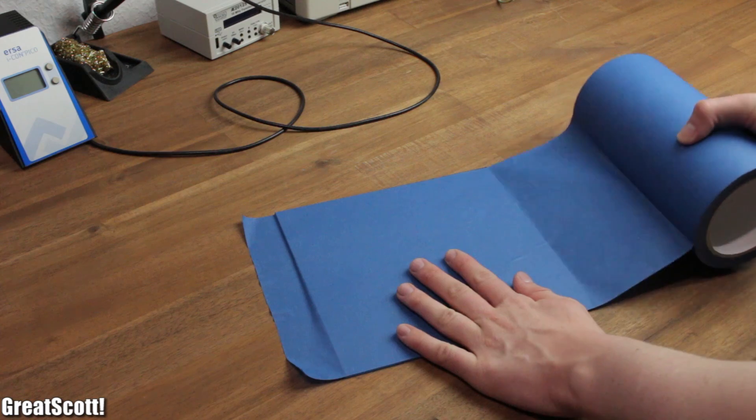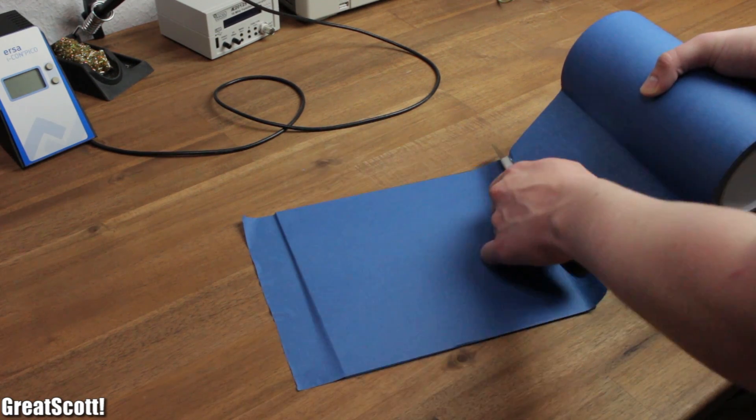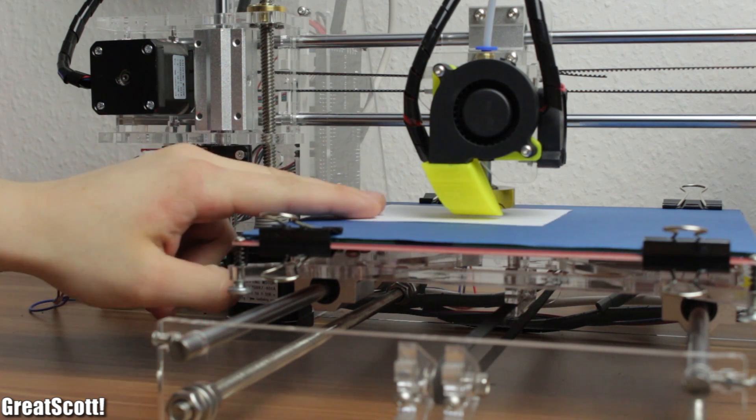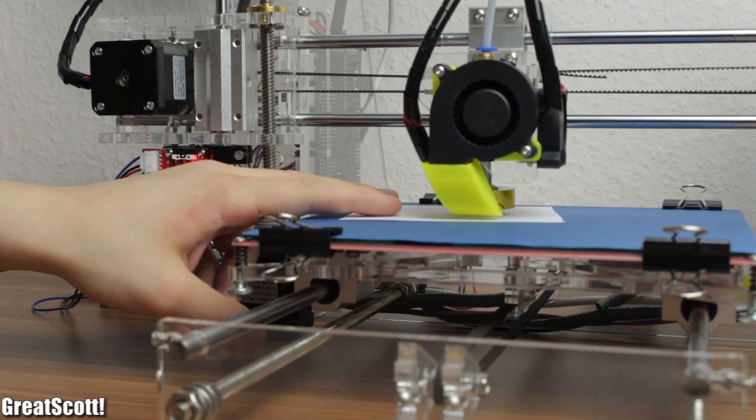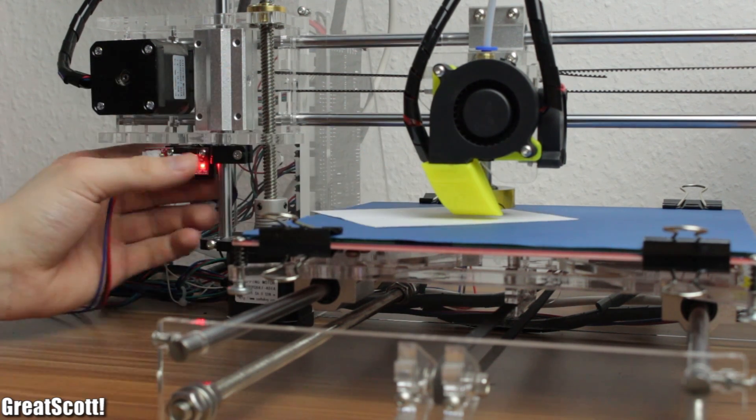Now let's calibrate the Z-home position by using a piece of paper. It should still be able to move underneath the extruder head but not completely free and loose. Now the print can begin.